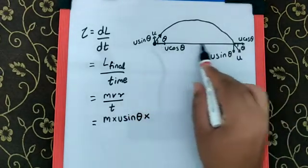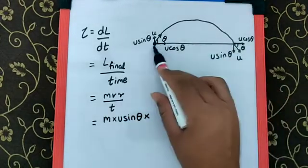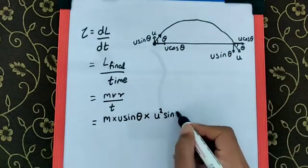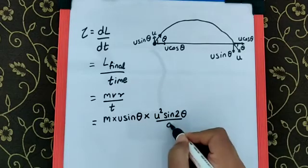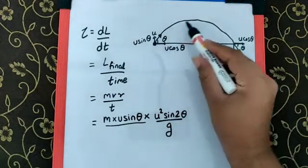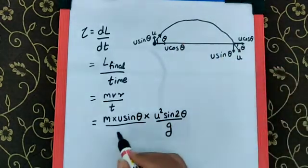The r, which is the distance over here, is nothing but the horizontal range, for which the formula is u square sine 2 theta by g. The time t is nothing but the total time of flight, for which the formula is 2 u sine theta by g.